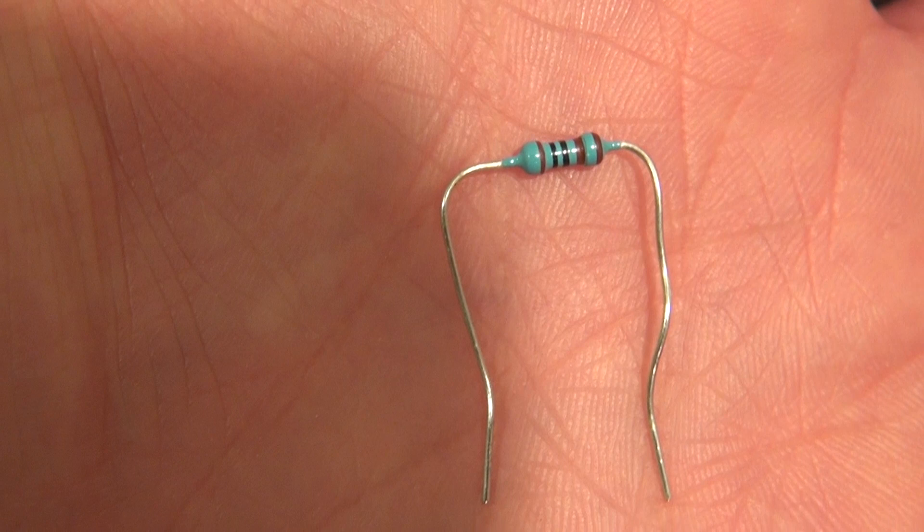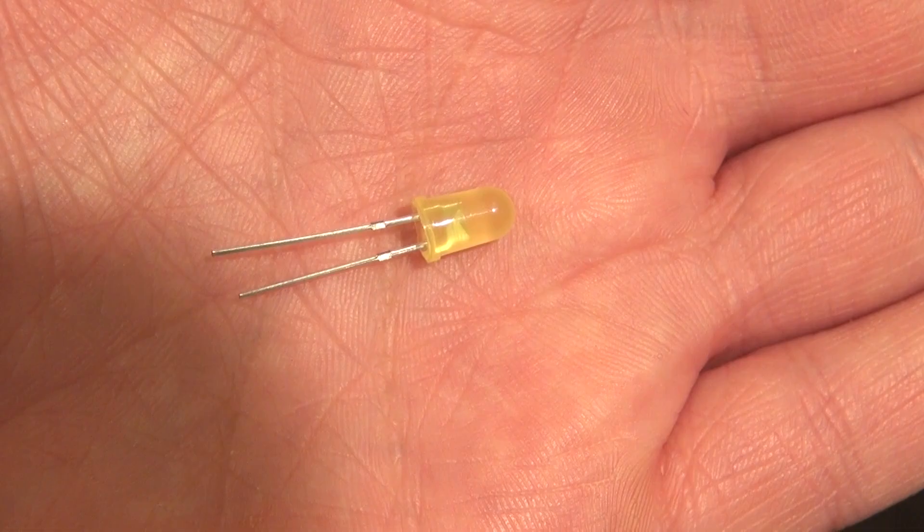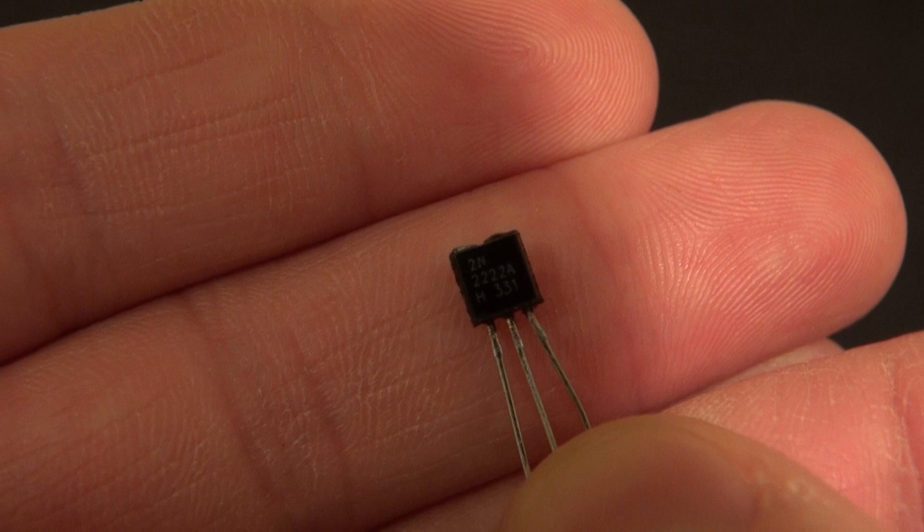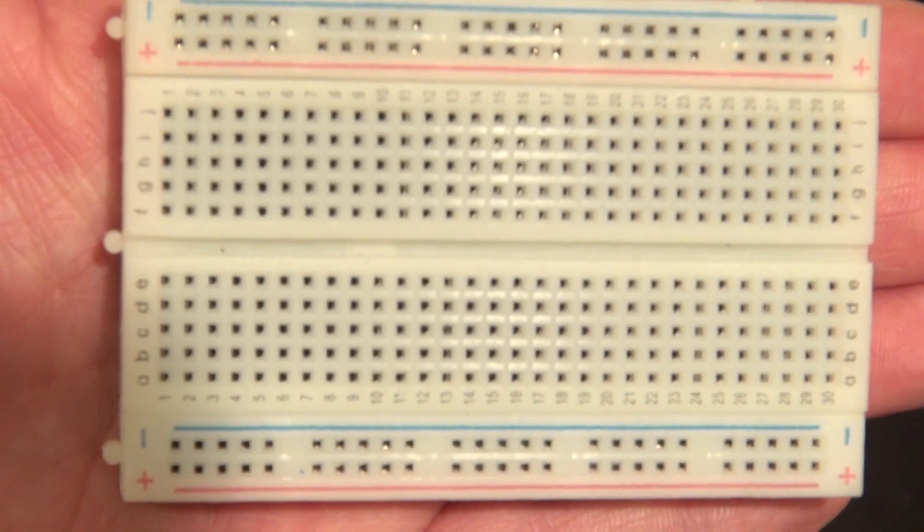Jumper cables, a 1k ohm resistor, an LED, and a 2N2222 NPN transistor and some alligator clips and a breadboard.